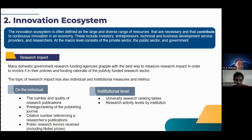At the individual level, there are several research impact indicators: first is the number and quality of research publications, then prestige or ranking of the publishing journal, then citation count, and the last is public research honors received. At the institutional level, there are university research ranking tables and research activity levels by institution.